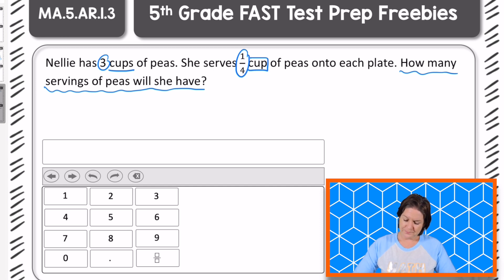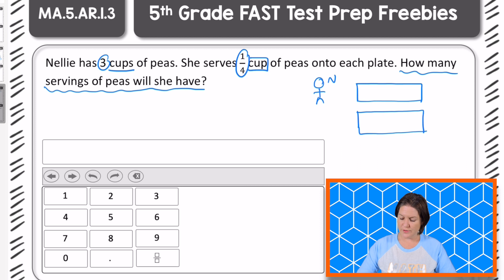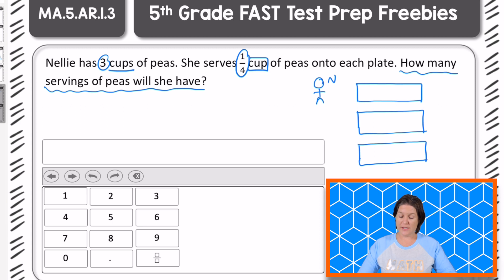So let me draw this out here. I've got somebody named Nellie and she has three cups of peas — here's one cup, two cups. I could have drawn this using a measuring cup or something like that, but I like to think of it in terms of whole area models. She serves one fourth cup of peas onto each plate, so if this is three cups, then what she's doing is for each cup, she's dividing it into fourths.